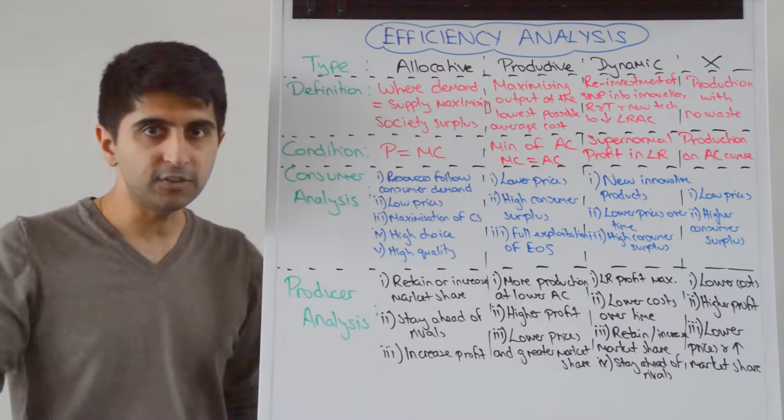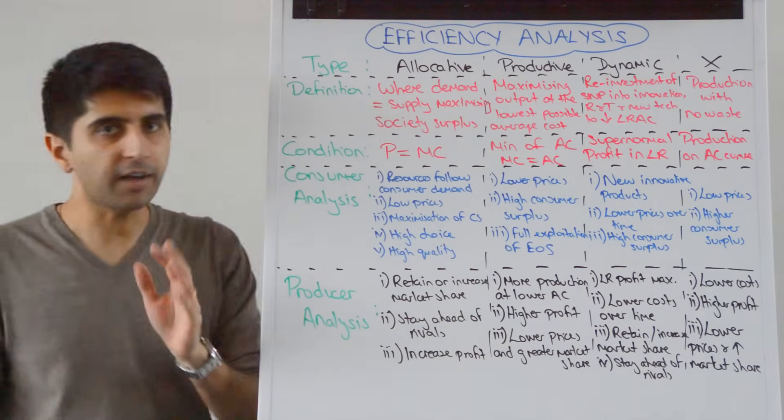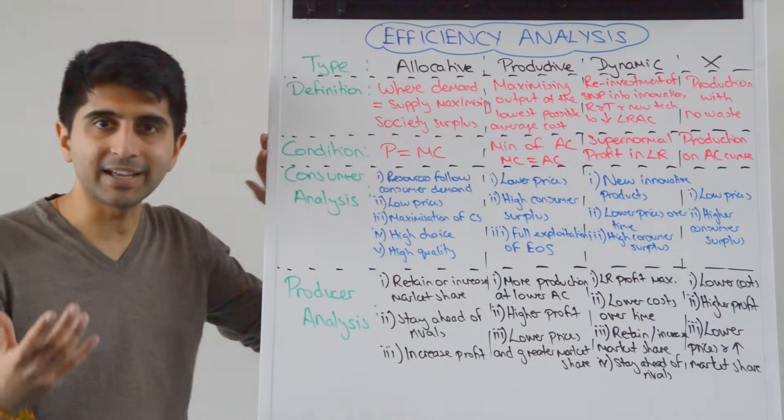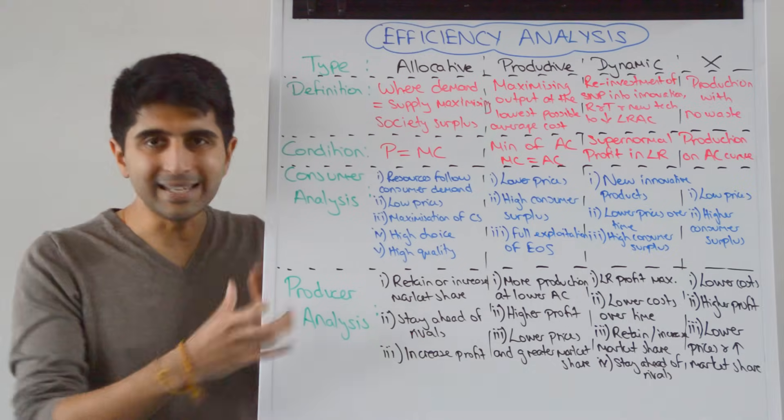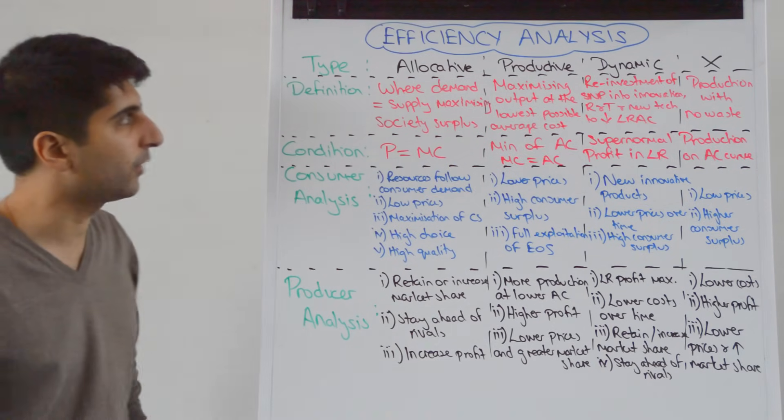Let's go through the efficiencies one by one. We'll re-cover the definition of them and where they occur on a business diagram, and then we'll go into in-depth analysis in terms of the consumer and then the producer as well.